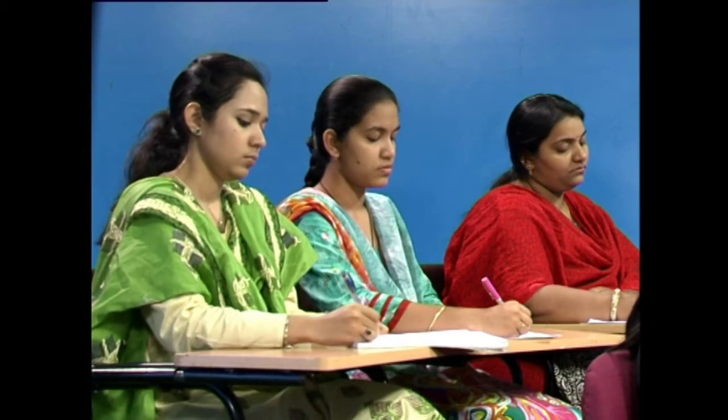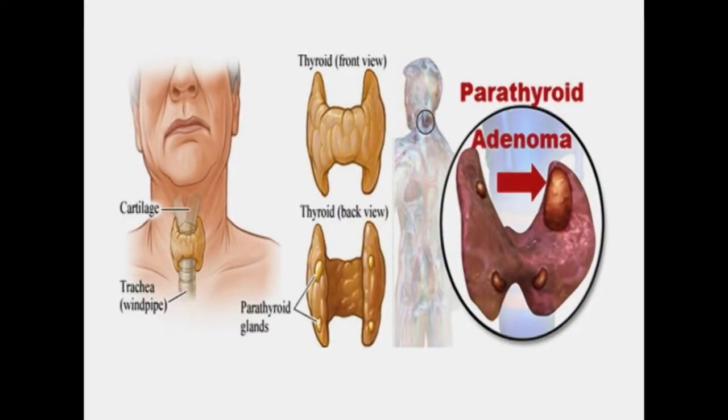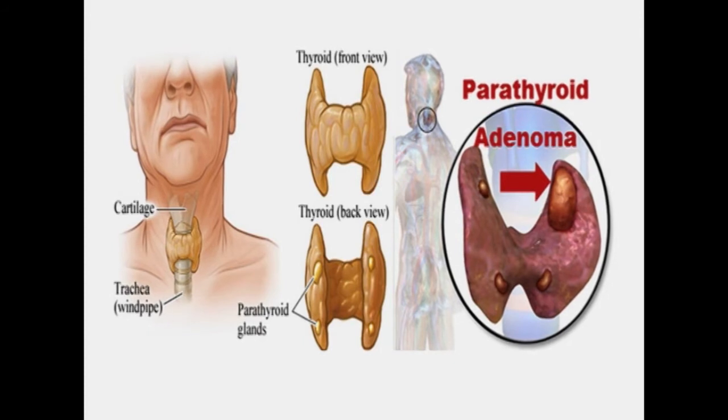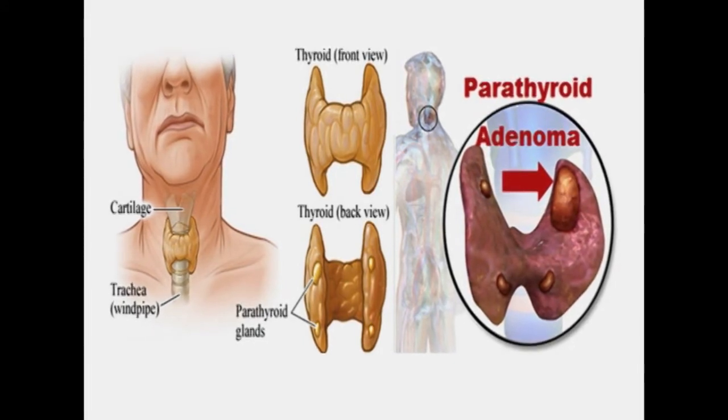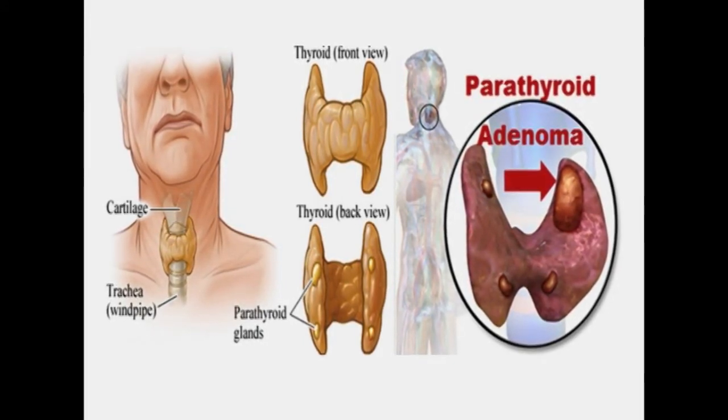This out-of-control parathyroid gland is rarely ever cancerous — that is, less than one in 2500 — however it slowly causes damage to the body because it induces an abnormally high level of calcium in the blood, which can slowly destroy a number of tissues. Parathyroid adenomas are typically much bigger than the normal pea-sized parathyroid and will frequently be about the size of a walnut.